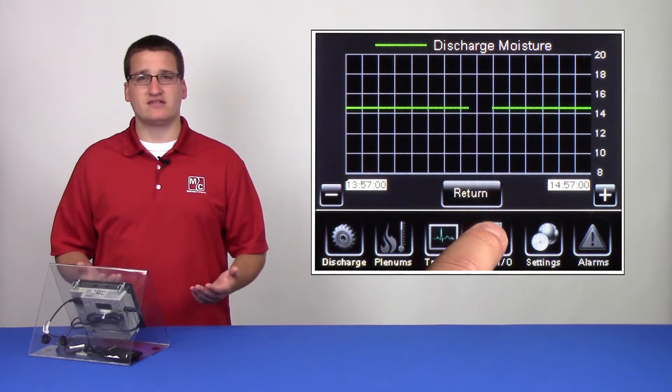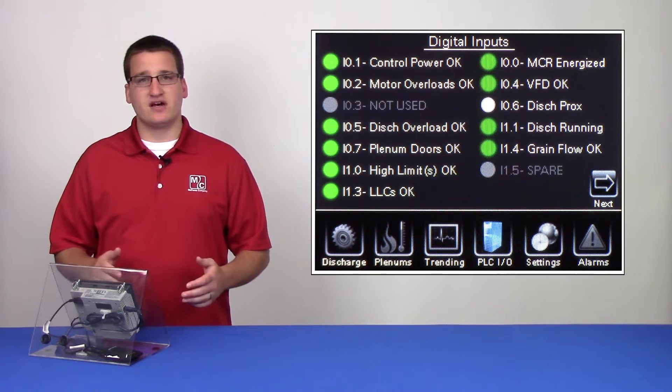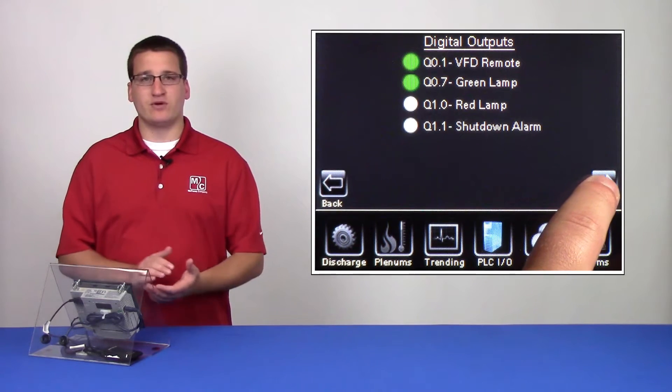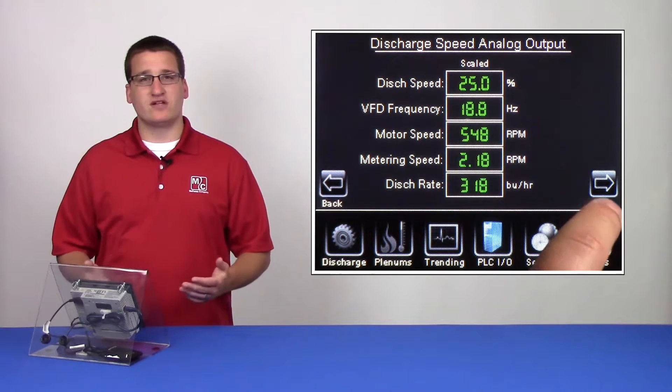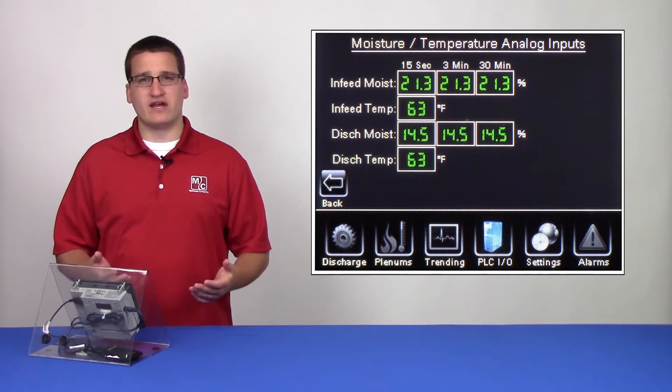The next chapter is the PLC IO chapter. There are several pages of all of the inputs and outputs to the PLC, as well as what their current state is. This will be useful in advanced troubleshooting.